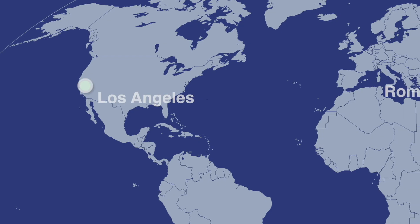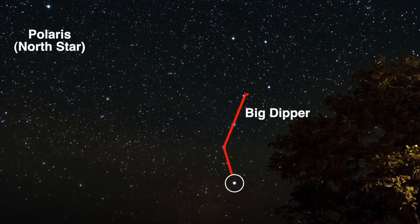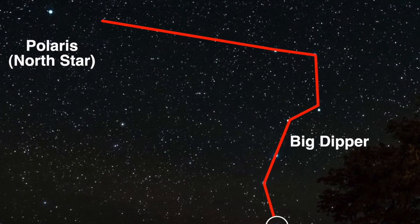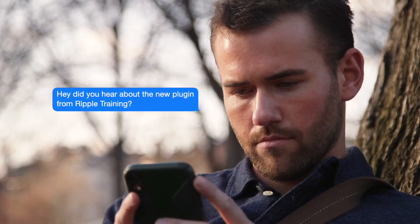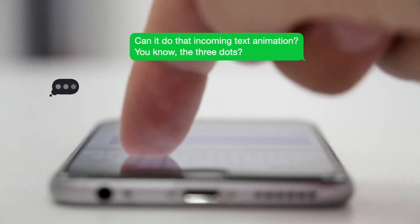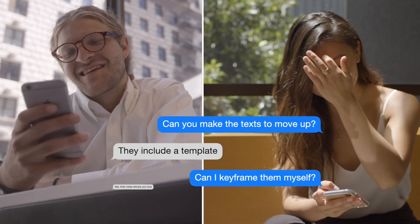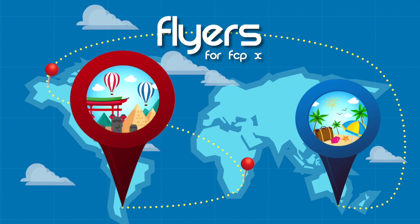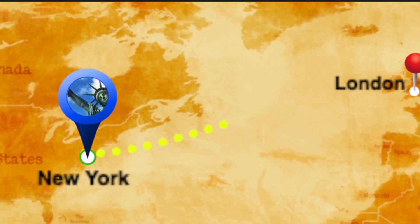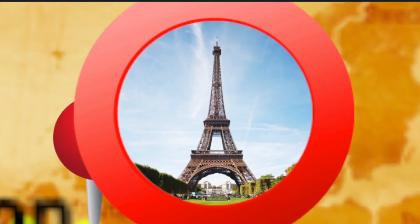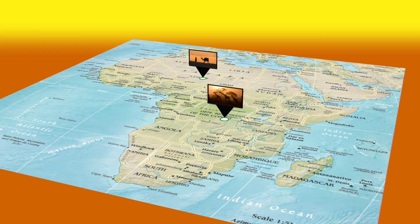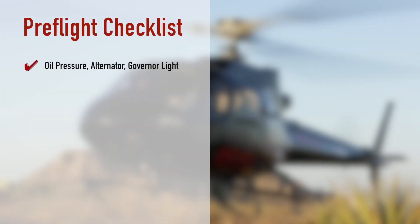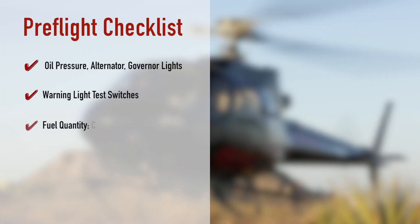Paths quickly adds animated lines to your videos. Messages makes it fast and easy to add animated text messages to your videos. Flyers transport your viewers from one location to another using any map or image. Bullets adds animated bulleted lists to your video.